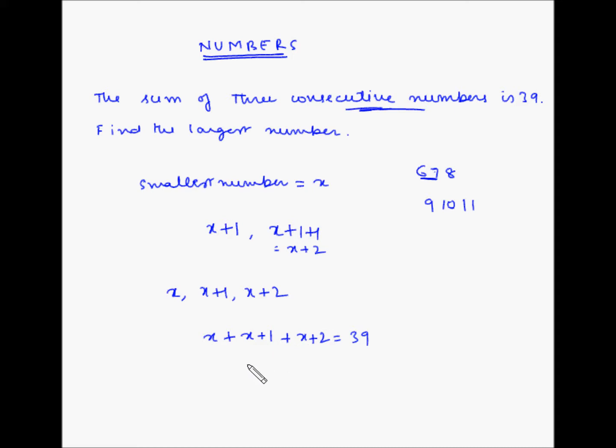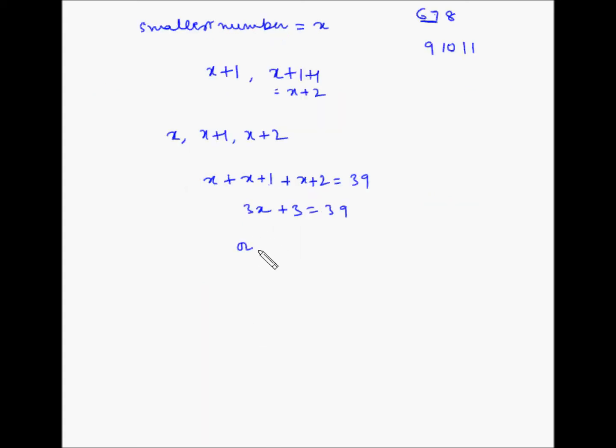So x plus x plus x becomes 3x. 1 plus 2 becomes 3 is equal to 39 or 3x is equal to 39 minus 3 which is 36 or x is equal to 36 divided by 3 which is equal to 12. So x is 12, x plus 1 is 13 and x plus 2 is 14.